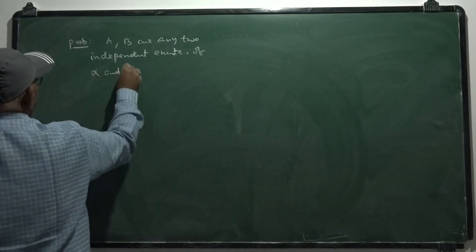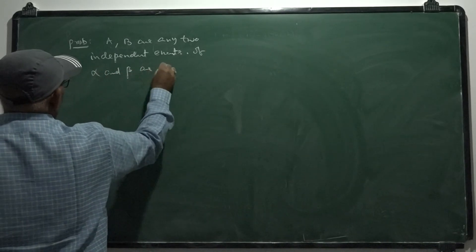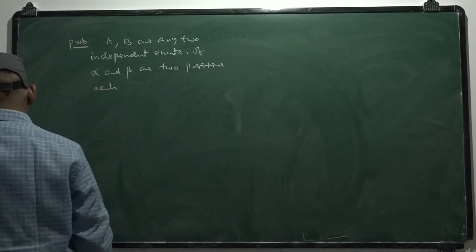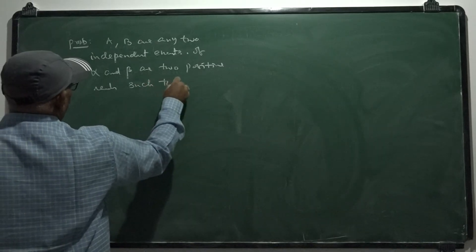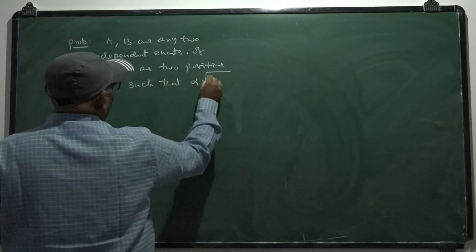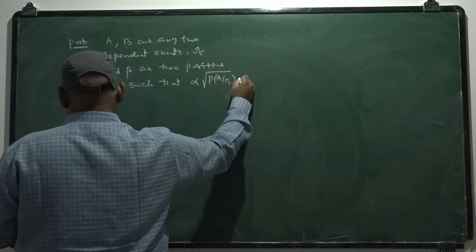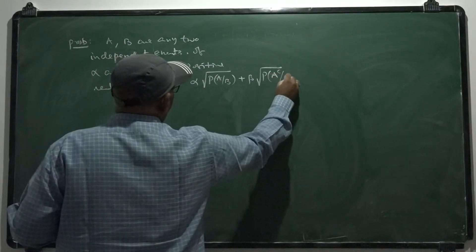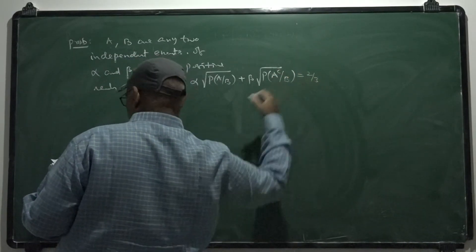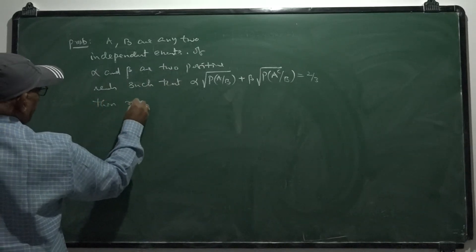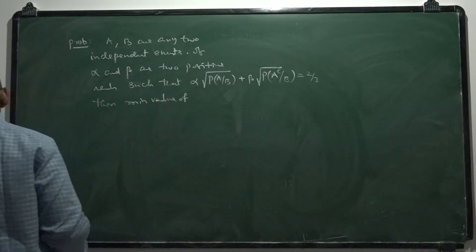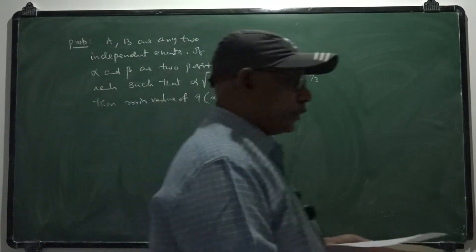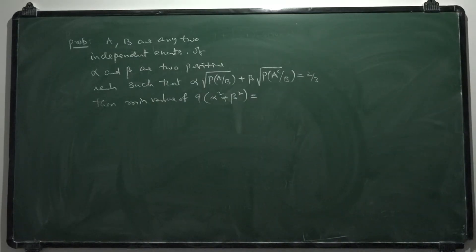If alpha and beta are two positive reals such that alpha times the square root of the conditional probability of A given B, plus beta times the square root of the conditional probability of A complement given B, equals 2 by 3 — then find the minimum value of 9 times alpha squared plus beta squared. This is an integer type question.